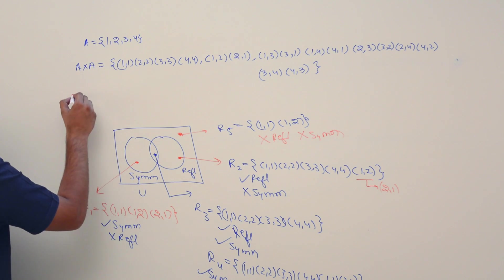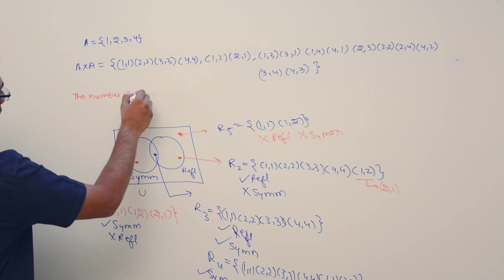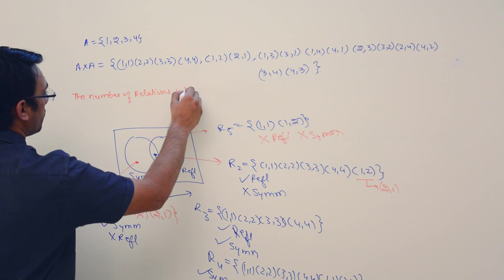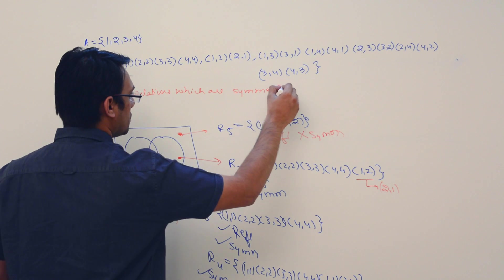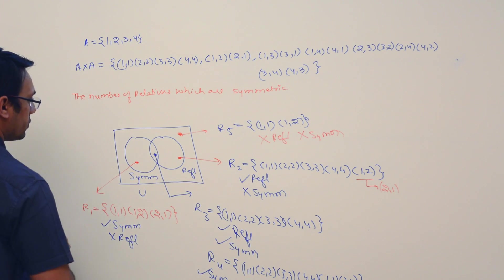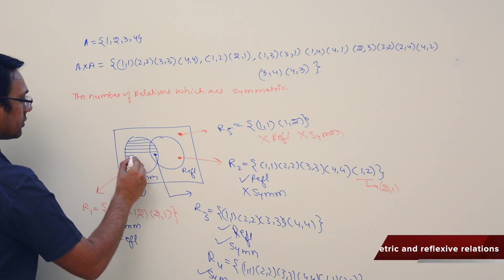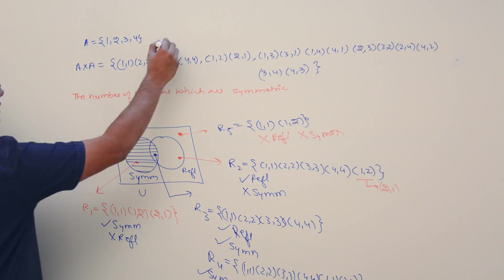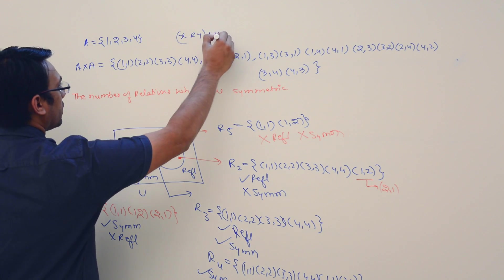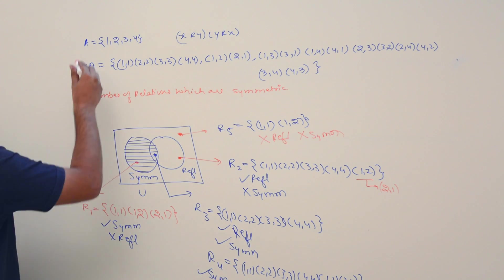Let us look at the number of relations which are symmetric. What are the number of relations which are symmetric? For a relation to be symmetric, if x relates to y, then y must also relate to x.